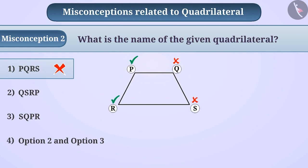So they think that the name of the quadrilateral cannot begin with Q or S. This is also a reason that the name given in option 1 is taken as correct.